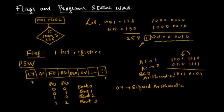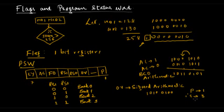The last bit is the parity flag, P. To understand this, consider the number 10100001 — it has three ones, which is an odd number, so the parity flag is set to 1. The parity flag is set to 1 when there is an odd number of ones in the accumulator. For example, the number 10101010 has an even number of ones, so the parity flag is set to 0.